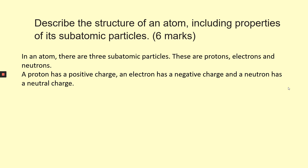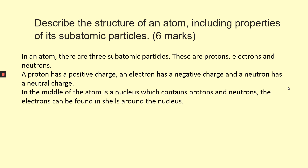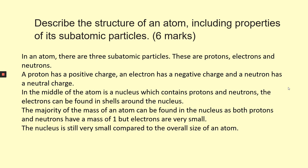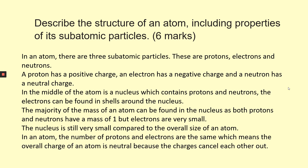Now let's look at where they are actually in an atom. In the middle of the atom is a nucleus, which contains protons and neutrons. The electrons can be found in shells around the nucleus. Looking at masses and the size of an atom: the majority of the mass of an atom can be found in the nucleus, as both protons and neutrons have a mass of one. The electrons are very small. The nucleus is still very small compared to the overall size of an atom. In an atom, the number of protons and electrons are the same, which means the overall charge of an atom is neutral because the charges cancel each other out.